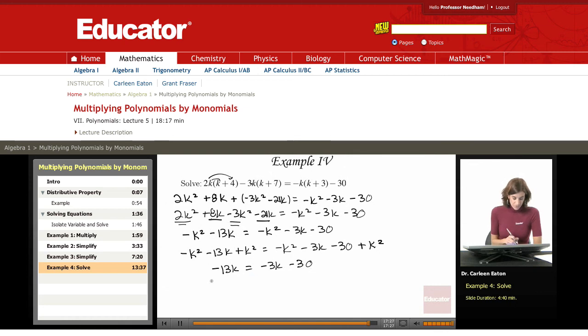I'm going to add 3k to both sides. And that's going to give me negative 10k equals negative 30. And then I divide both sides by negative 10, and I come up with k equals 3.